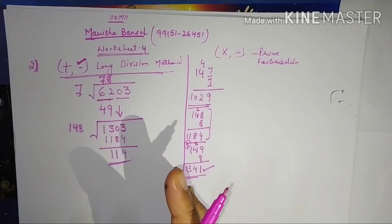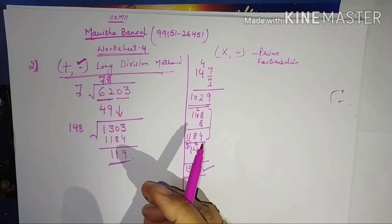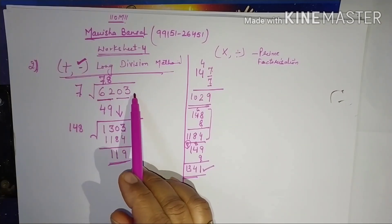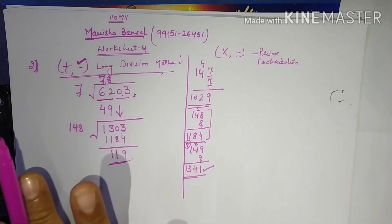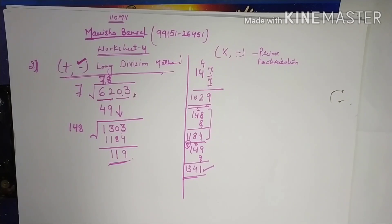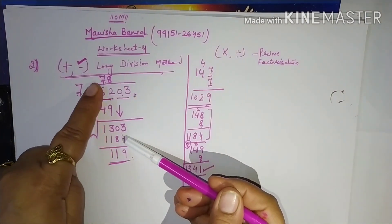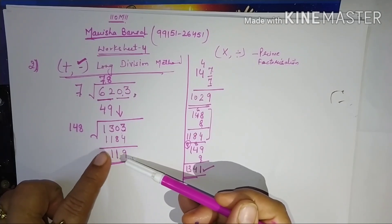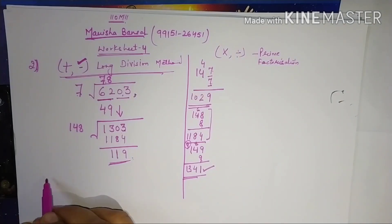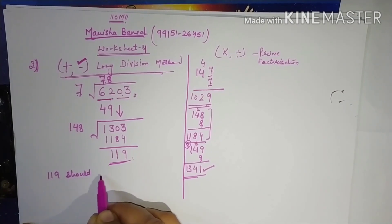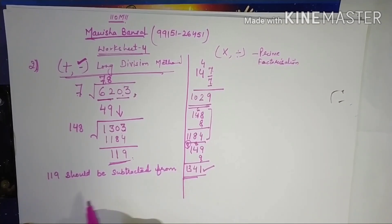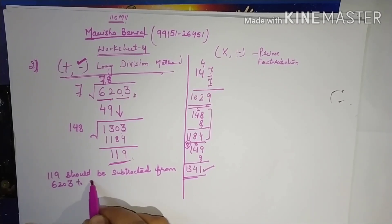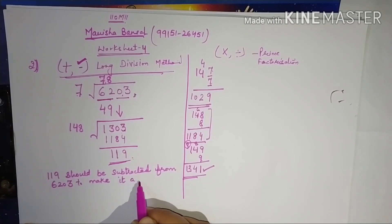Now concentrate on the statement: find the least number which must be subtracted from 6203 to obtain a perfect square. It means something extra is added in 6203 which we need to subtract. Whatever remainder is left — that is the extra number. So 119 must be subtracted from 6203 to make it a perfect square.